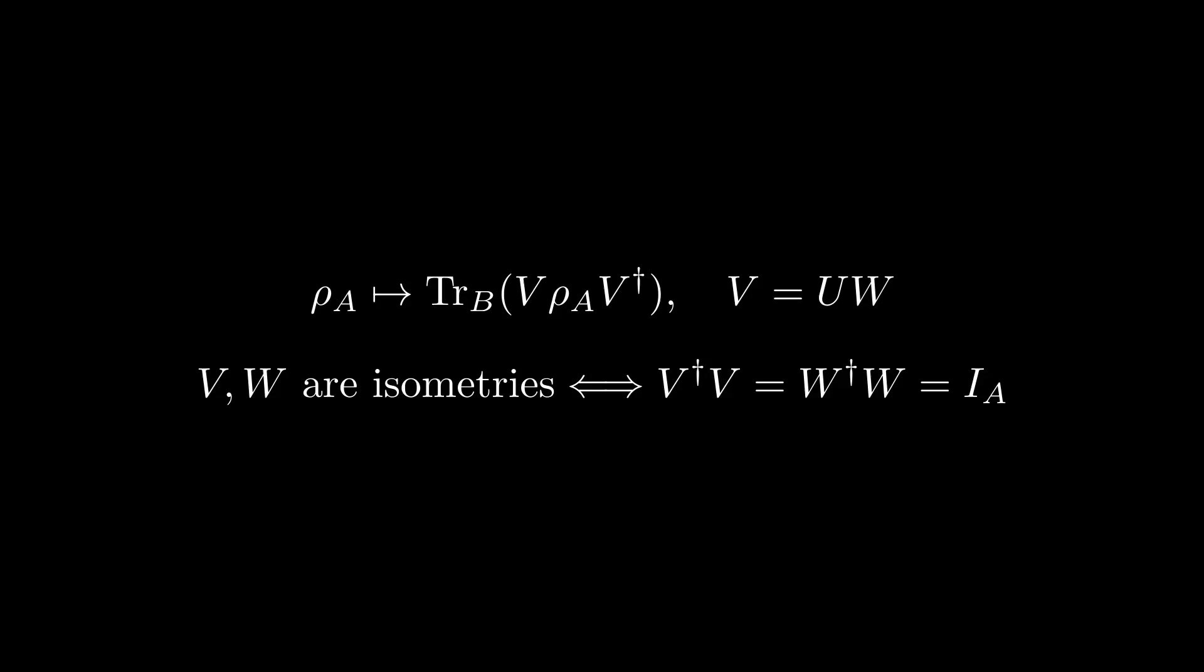This special isometry V is called the Steinspring dilation, and it gives us one way of representing the action of a quantum channel via partial trace.